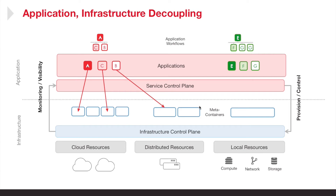After that, there is a feedback loop which provides monitoring and visibility into the applications themselves back to the service control plane. Information is collected about the operating system around the application containers and about the applications themselves, providing information on how exactly those applications are performing at a given instant. This can then inform the service control plane on what further actions to take in order to maintain or ensure application quality of service.